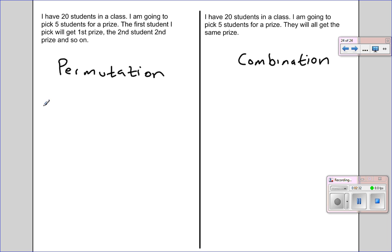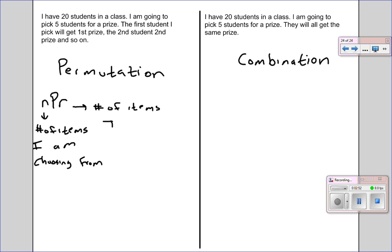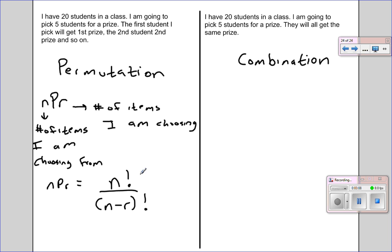The notation for a permutation is what we call NPR, where N is the number of items I am choosing from — the key word there is 'choosing from' — and R is the number of items I am choosing. NPR has an actual formula, which is N factorial over N minus R factorial. So in this situation, it would be 20 factorial over 20 minus 5 factorial, which is 20 factorial over 15 factorial. We'll come back to this in a second and actually solve that.